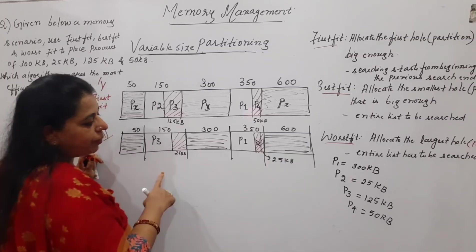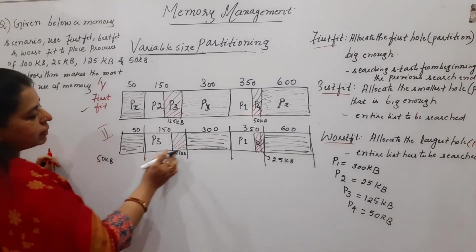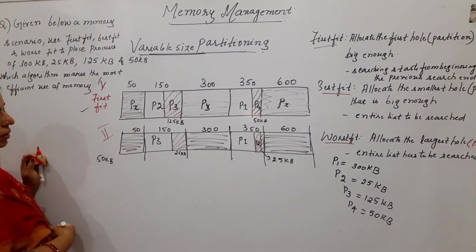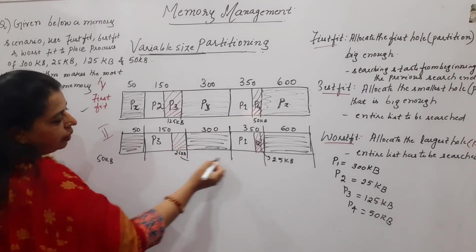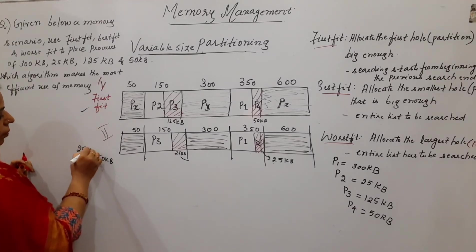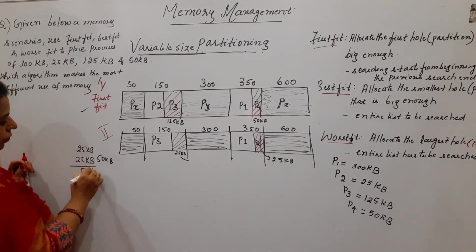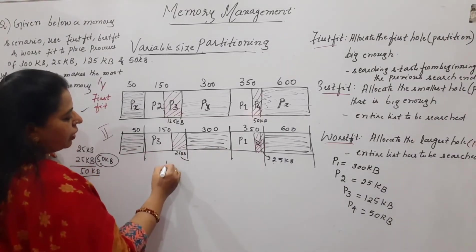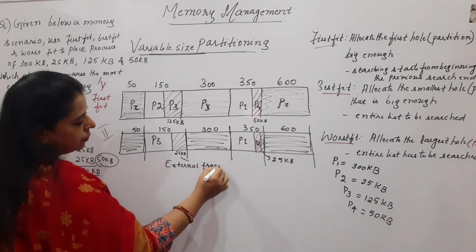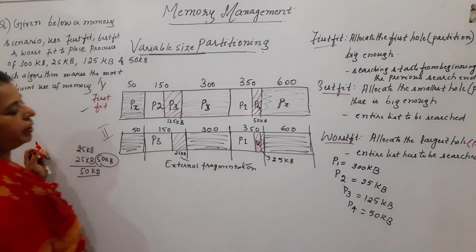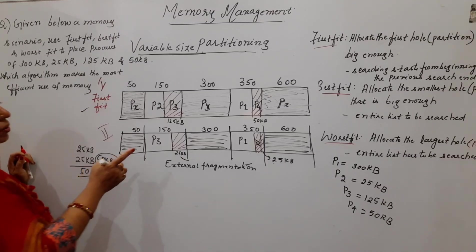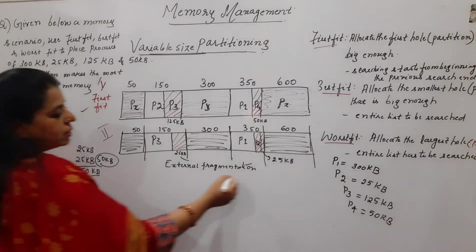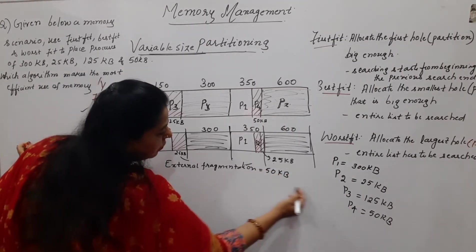Now you have to place the fourth process. Fourth process size is 50 KB. Are you finding any space equal to 50 KB? No — everything is occupied now. You have 25 KB here and 25 KB there, which together total 50 KB, matching the process request of 50 KB, but these two are not in a contiguous manner. Hence you cannot accommodate P4. So we can say external fragmentation exists here. You were able to accommodate P1, P2, and P3 successfully, but P4 you were not able to accommodate — external fragmentation of 50 KB exists.